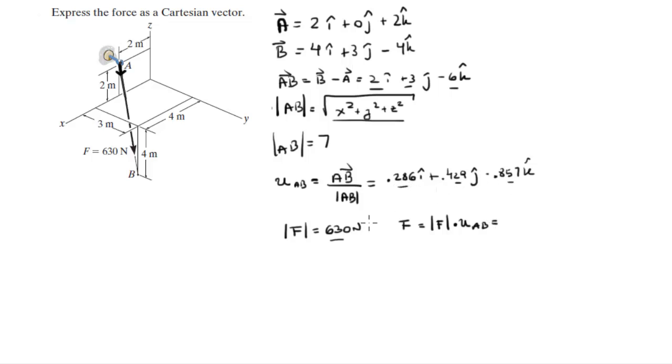Multiplying each of these three values by this magnitude gives you the Cartesian vector form of the force, which comes out to be 180i plus 270j minus 540k. Final answer.